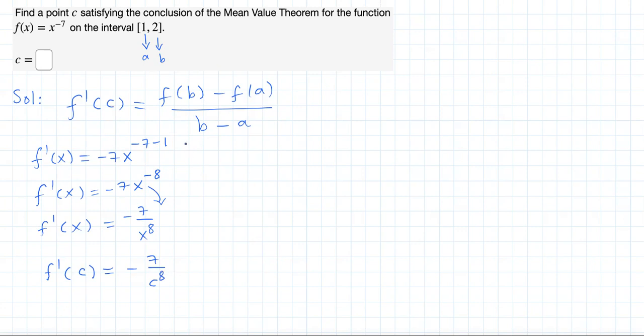Now let's work out this part. This should be f(b), but b is 2, minus f(a), a is 1, over